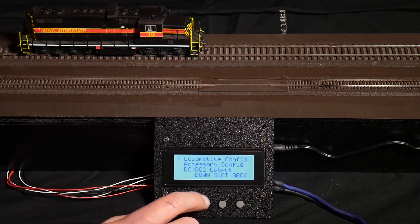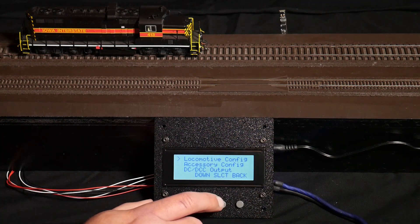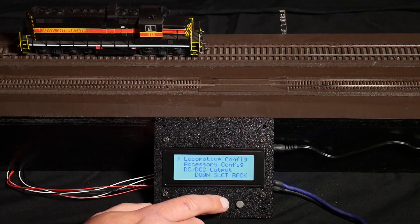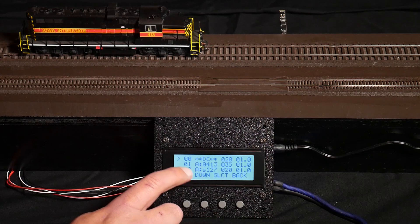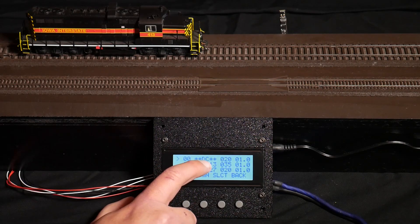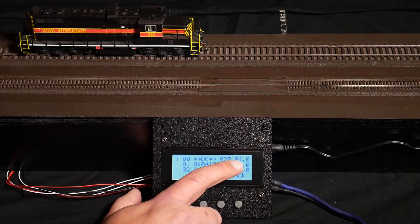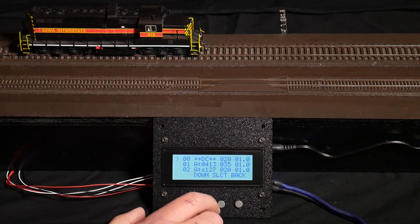So if we walk through the configuration here, I mentioned that the Motorman can handle up to 15 different DCC configurations. That's handled under locomotive config. As you can see, the first one is the DC slot. This configures the DC locomotive will go 20% of maximum speed and have an acceleration rate of one second.